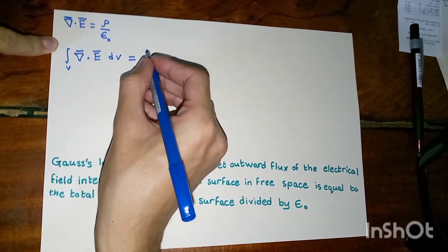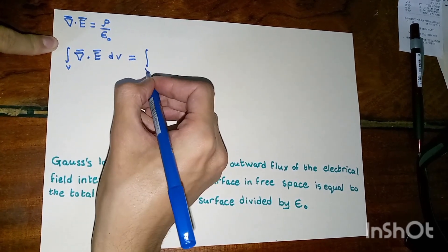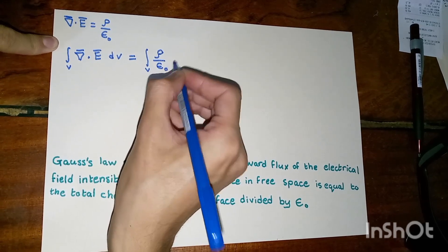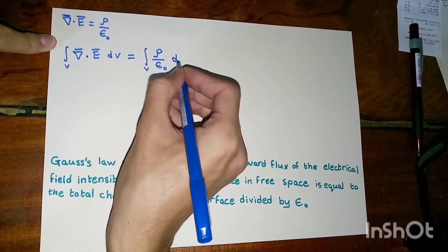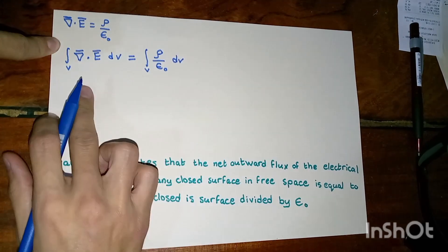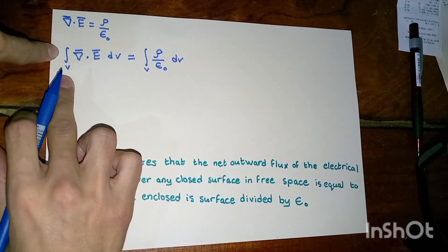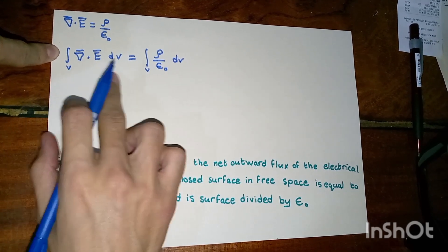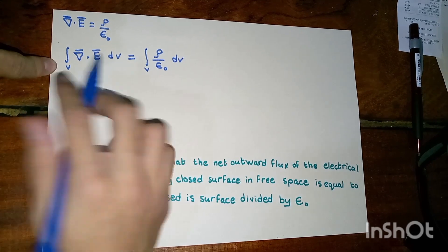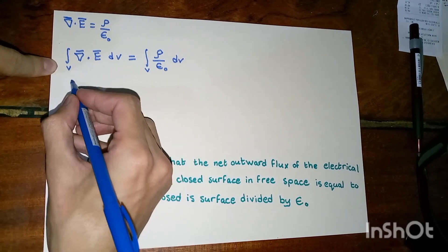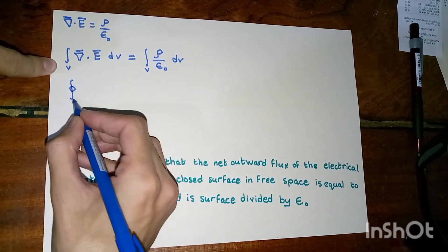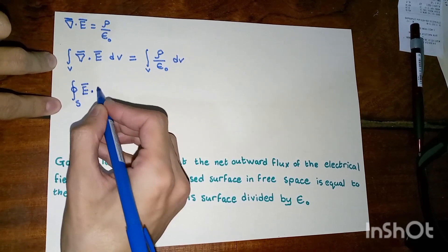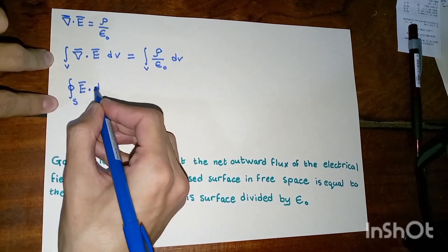For the right-hand side we have rho divided by epsilon. The divergence theorem states that when we take the volume integral of the divergence, we end up with the surface integral of the electrical field intensity.